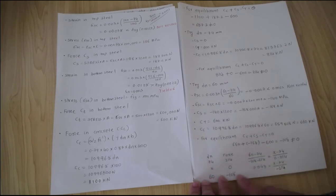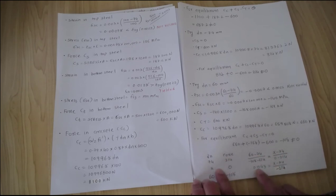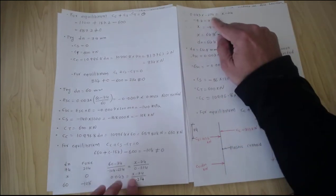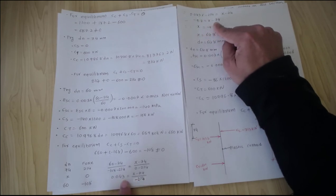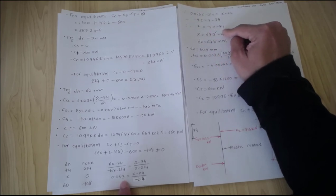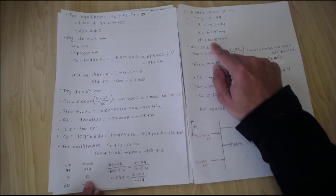We use linear interpolation: (60 − 74) / (−108 − 214) equals (x − 74) / (0 − 214). Simplifying: 0.025 times minus 214 equals x minus 74, giving minus 9.2 equals x minus 74, so x equals minus 9.2 plus 74, which gives x equal to 64.8. So dn equal to 64.8 millimeters is the value that will give me zero force.